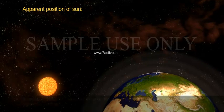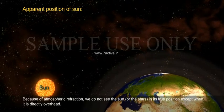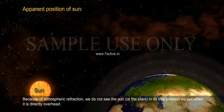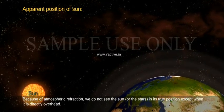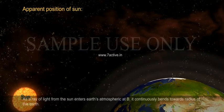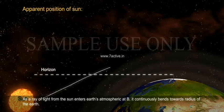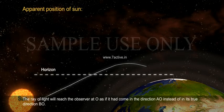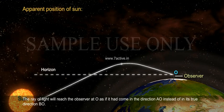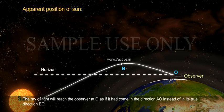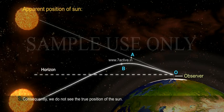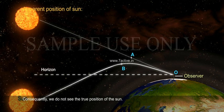Apparent Position of the Sun: Because of atmospheric refraction, we do not see the sun or the stars in their true position except when directly overhead. As a ray of light from the sun enters Earth's atmosphere at B, it continuously bends towards the radius of the Earth. The ray of light will reach the observer at O as if it had come in the direction AO instead of its true direction BO. Consequently, we do not see the true position of the sun.